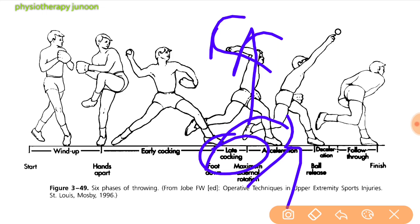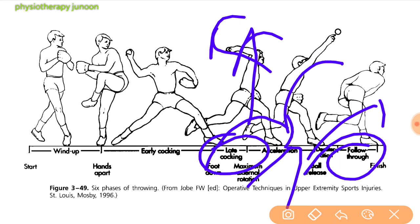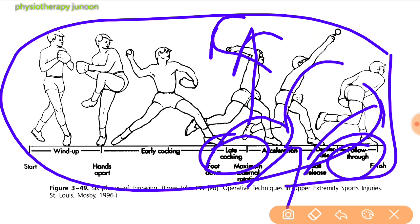The acceleration phase begins with further forward body motion, then internal rotation of the humerus leading to internal rotation of the throwing arm. Acceleration ends with ball release. The follow-through phase completes the remaining 70% of time required to dissipate the excessive kinetic energy; all major muscle groups must eccentrically contract to accomplish this.